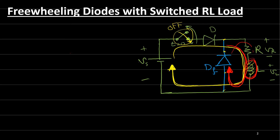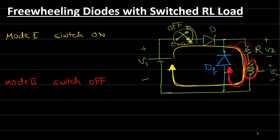Now again we have two currents: the yellow current when the switch is on, and the red current when the switch is off. During the first mode when the switch is on, the current will be exactly similar to what we derived last time, so this will be: i(t) = (VS / R) × (1 − e^(−R/L × t)).